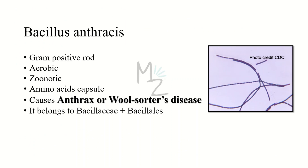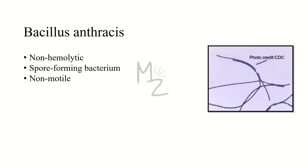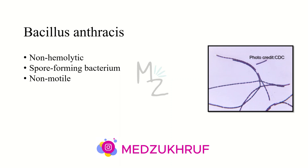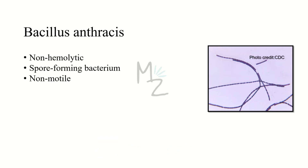Bacillus anthracis belongs to Bacillaceae or Bacillales — families that include gram-positive bacteria, specifically gram-positive rods. In pictures it shows a chain-like growing pattern but can also form pairs; it is a long bacterium with square ends. It is non-hemolytic, meaning it does not cause hemolysis on blood agar. It is spore-forming, releasing endospores under unfavorable conditions such as food scarcity — spores are a dormant, dehydrated, multi-shelled structure in which bacteria do not divide. Bacillus anthracis is non-motile, unlike Bacillus cereus which has flagella for motility.